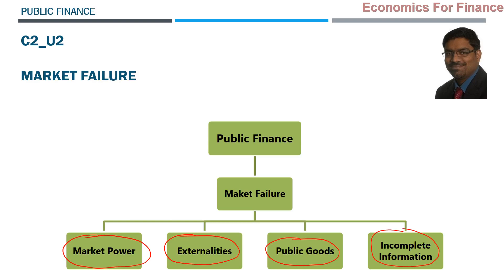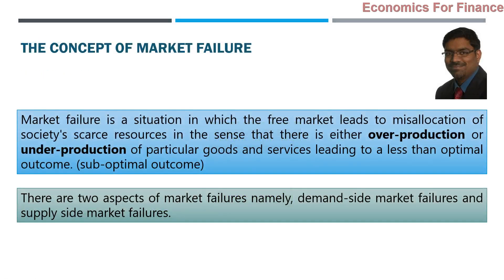In this unit, we have to deep-dive into each of these reasons and understand what causes a situation of market failure in each scenario — that is the scope of this unit on market failure as part of chapter 2 on public finance. First of all, let us understand the concept of market failure. When can we say that market failure has happened? What kind of situation can be called a market failure?